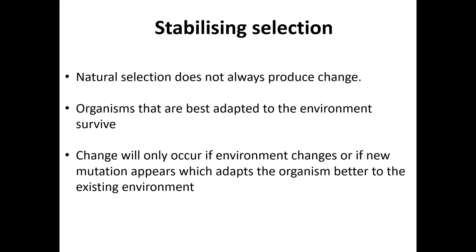Stabilising selection does not always produce changes. Organisms that are best adapted to their environment survive. Change will only occur if the environment changes, depending on what the organism is adapted to — its habitat is one of the main factors that changes selection.